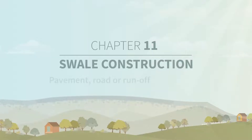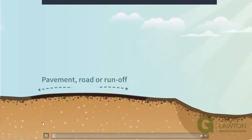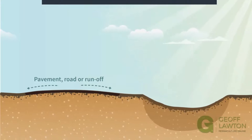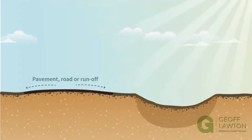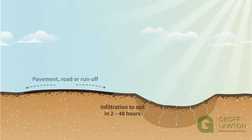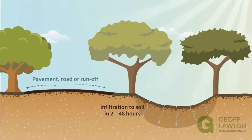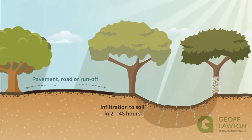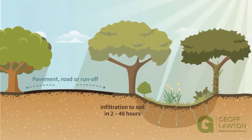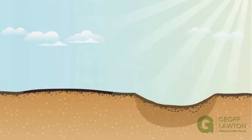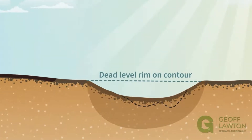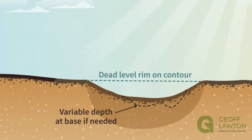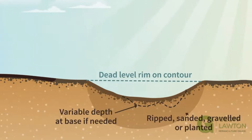Hard surface runoff water concentration can be a great advantage to infiltrate into growing systems. Swales by roadsides provide tree water and shade that cools urban streets. These roadside swales will infiltrate water in 2 to 48 hours and provide ample irrigation. After early vegetation establishment, trees will overshade the swales with climbing vines, shrubs as understory, and semi-aquatics occupying the base. The roadside swale has no mound and needs a perfectly level seal on both sides, but the base can have variable depth and can be deep-ripped, sanded, graveled, or planted.